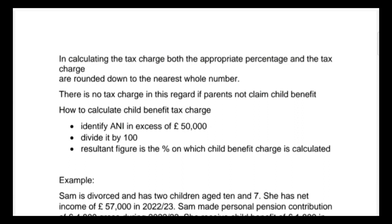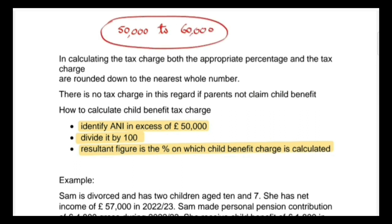To calculate the child benefit charge, first identify the adjusted net income in excess of £50,000, then divide this by 100 to get the percentage on which the child benefit charge is calculated. An important point: if the adjusted net income is between £50,000 and £60,000, apply this three-step approach. If the adjusted net income is £60,000 or more, then you apply this to £60,000.